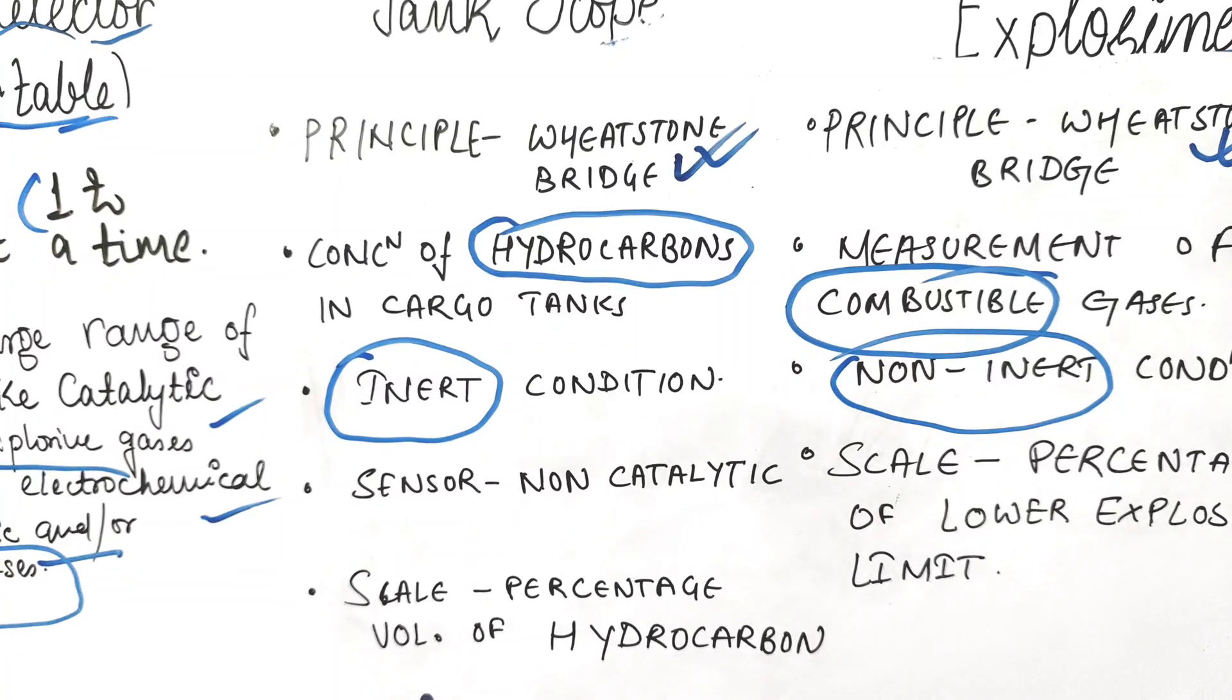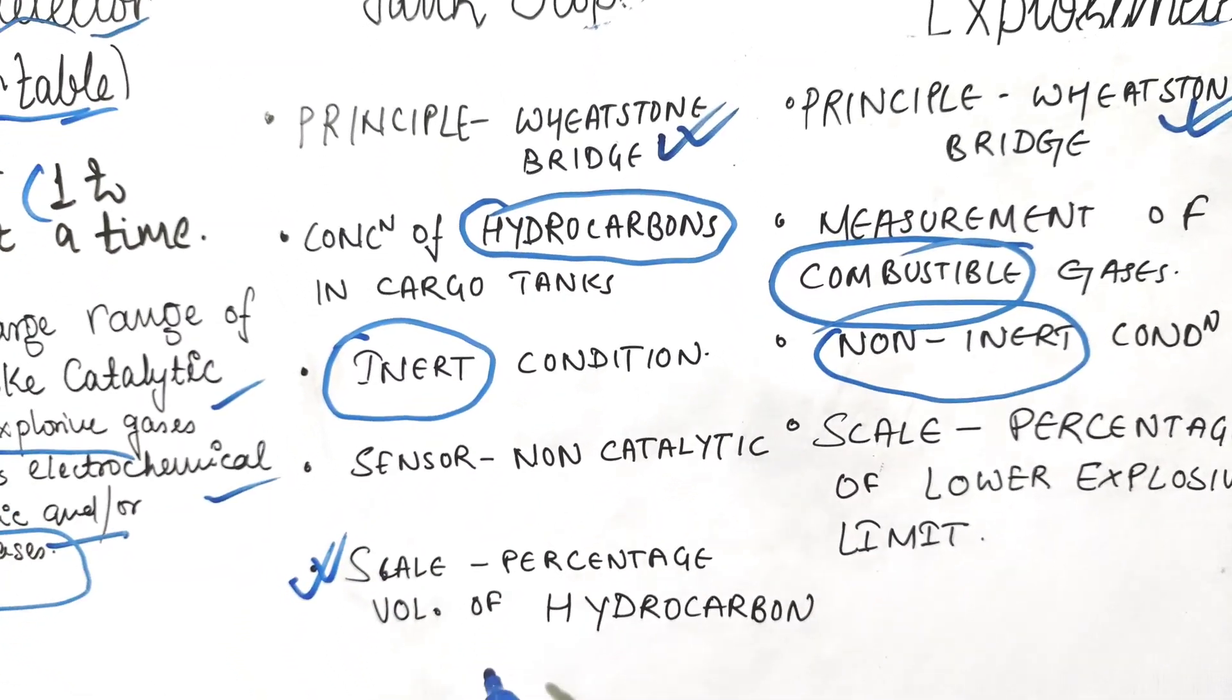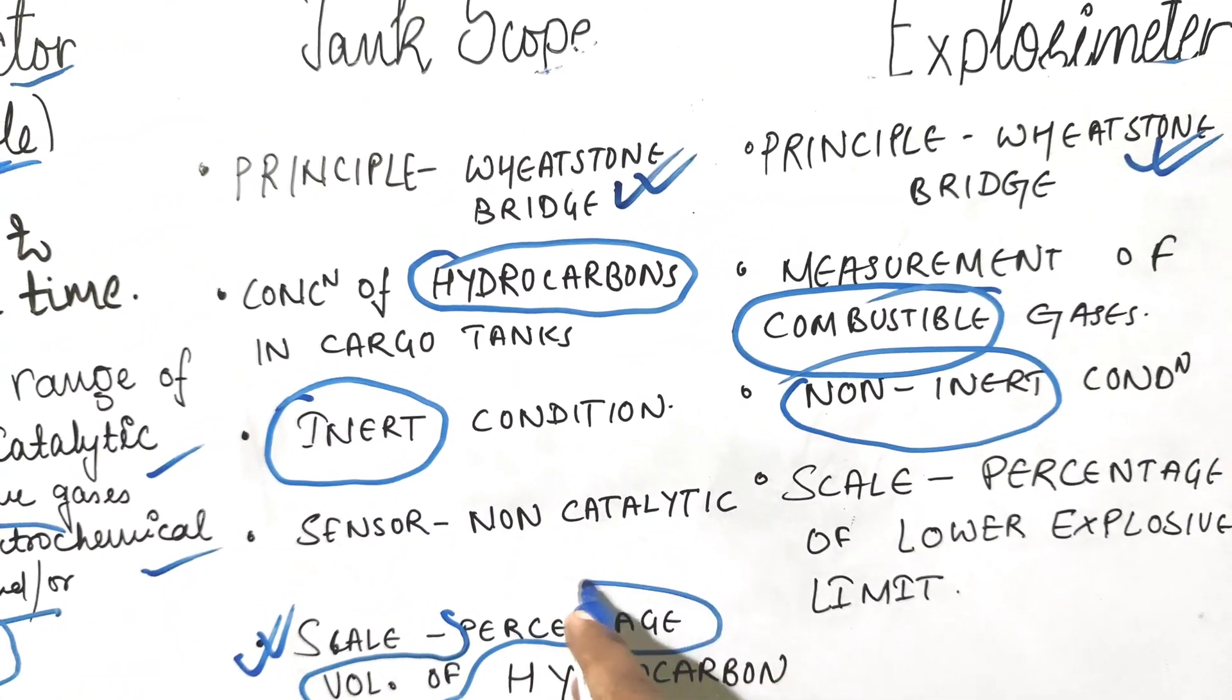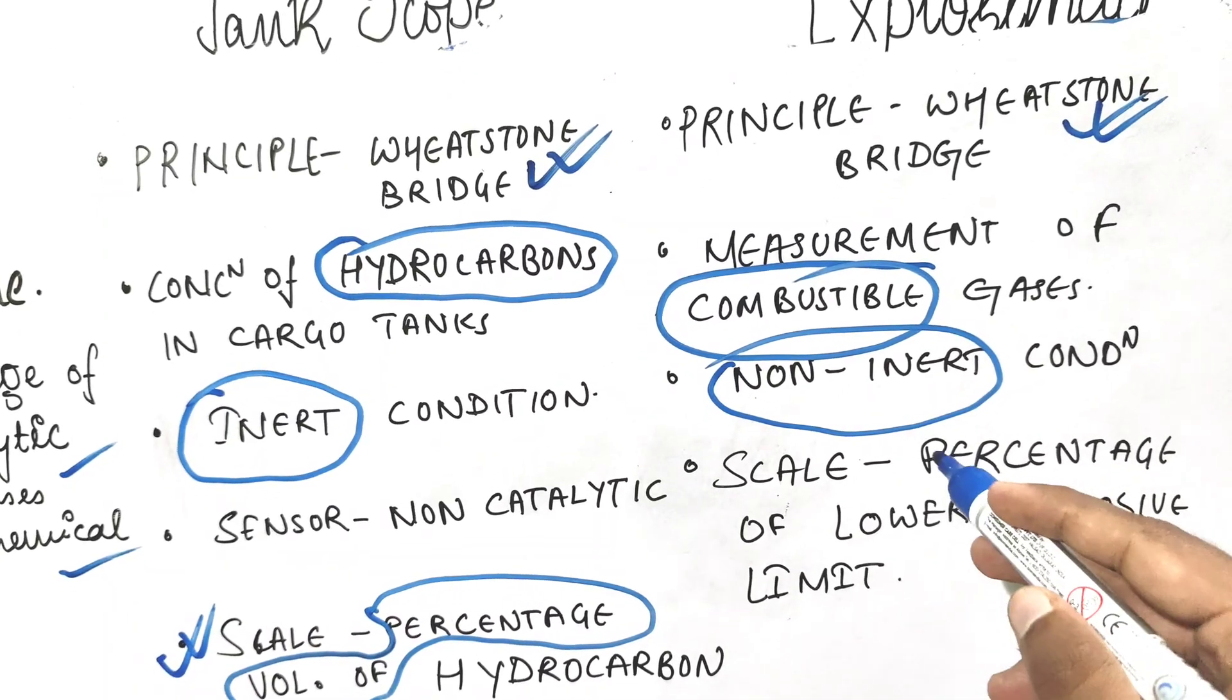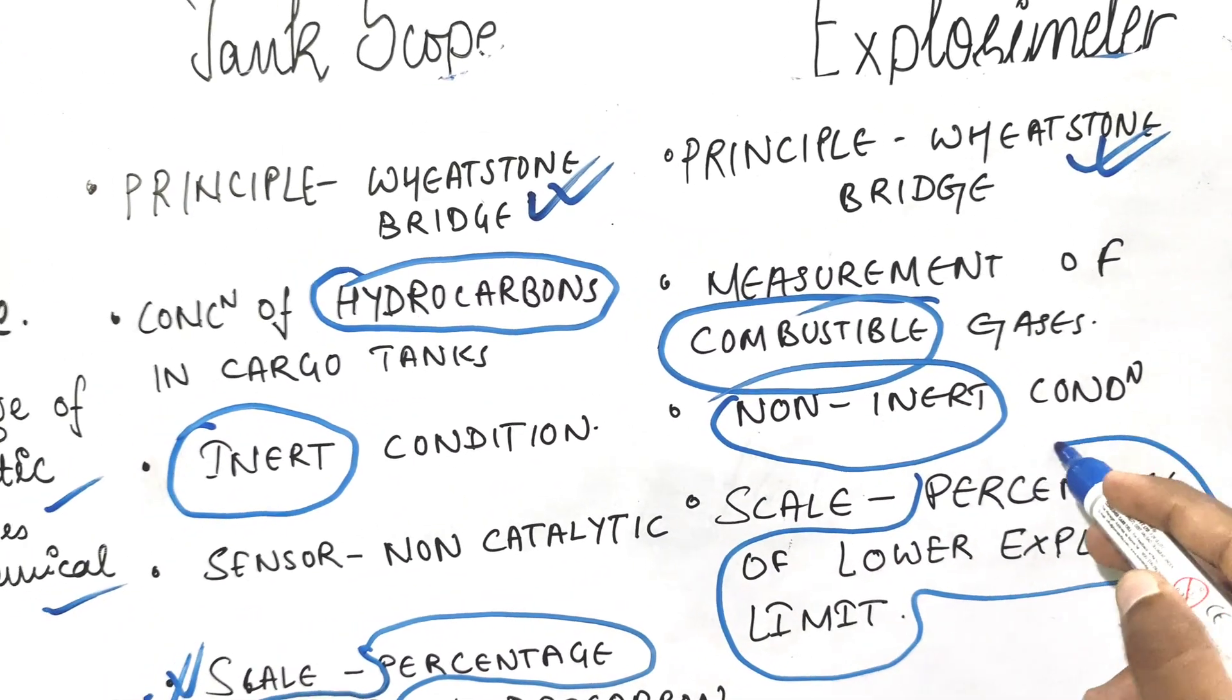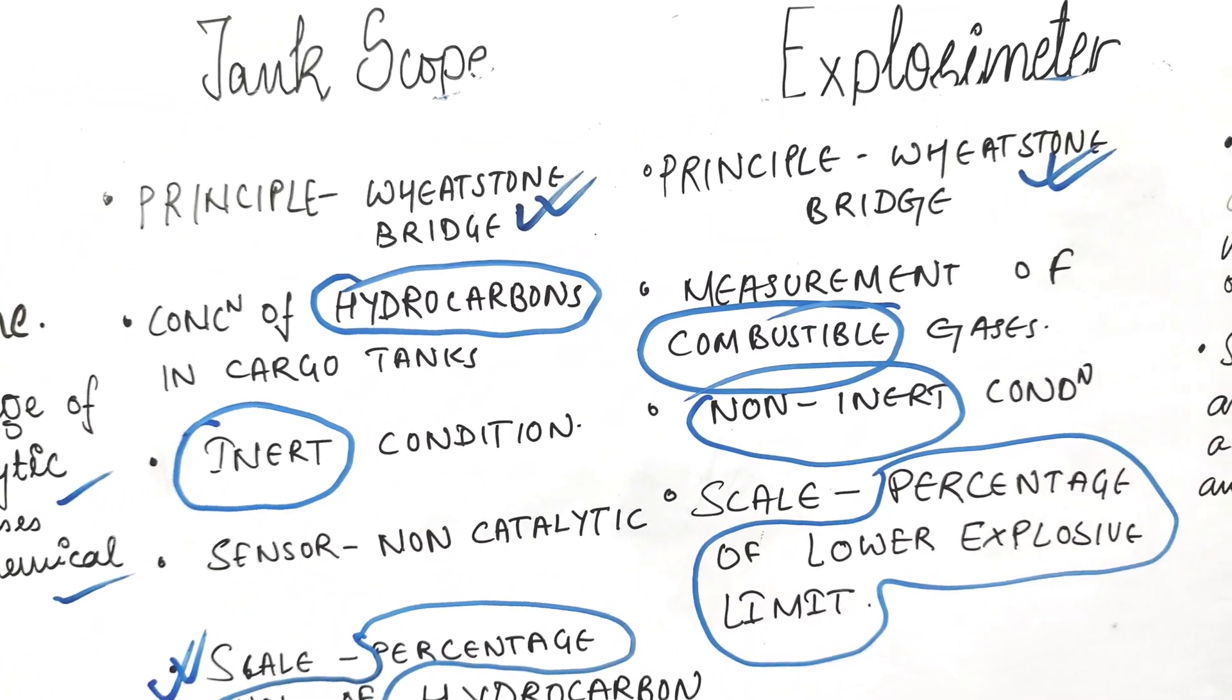There is also a difference in the scale. For tankoscope, we have percentage volume of hydrocarbon, whereas in case of explosimeter we have percentage of LEL—Lower Explosive Limit. This is very important and you need to know it.